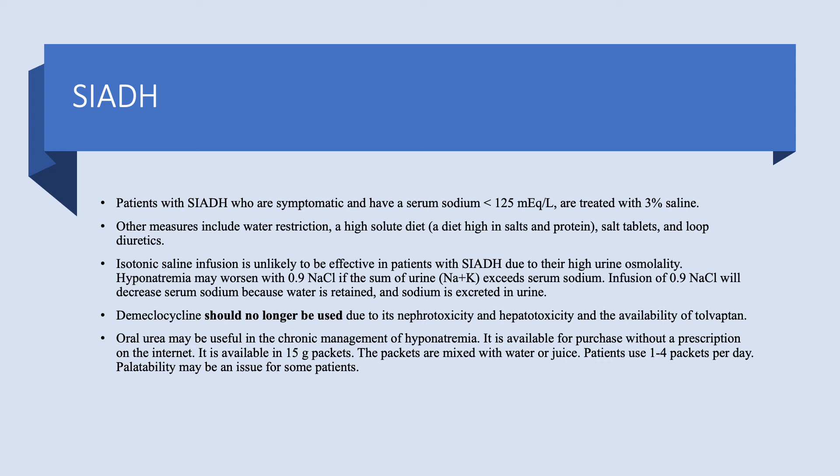In the past, demeclocycline was used to correct hyponatremia in SIADH — please do not use this medicine. It is nephrotoxic and hepatotoxic and should not be used. There is no excuse to use it, especially now that we have tolvaptan. Oral urea is used a lot in Europe and is now available in the United States without a prescription — it can be purchased online.